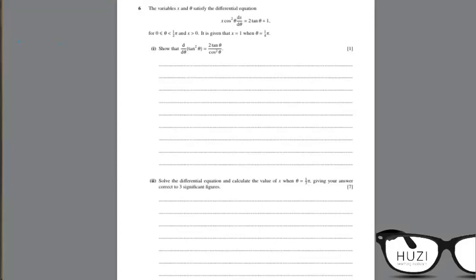Question number 6. The variables x and theta satisfy the differential equation, where theta is greater than 0 and less than pi by 2, and x is greater than 0. It is given that x equals 1 when theta equals pi by 4.